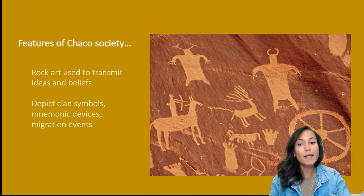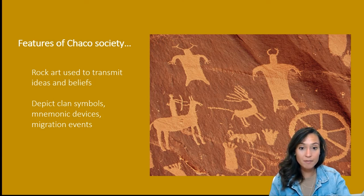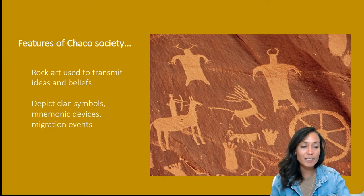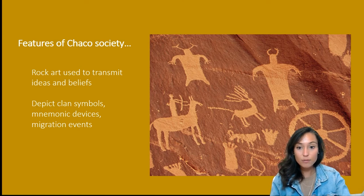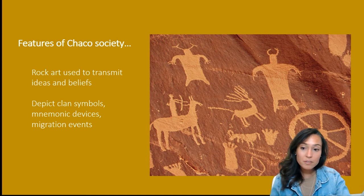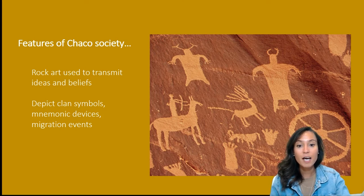There's no writing at Chaco Canyon to date, but there is lots of rock art, which has similar ways of depicting ideas and history in the form of abstract objects and figures. Rock art, like writing, is used to transmit ideas and beliefs. We see all sorts of rock art images at Chaco, including spirals, hatching, stylized humans, flute players, hands, mountain sheep, birds, and insects, as well as depictions of clan symbols and the narration of migration events.